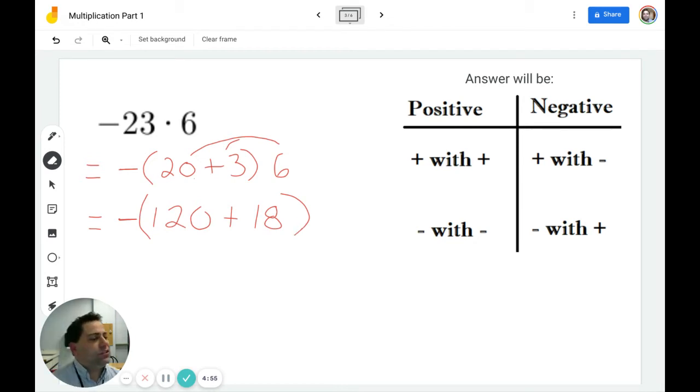And now I have to just add 120 plus 18. If you don't remember some of the strategies we talked about when doing addition, you just have to go back and view those videos. But essentially what we need to do is 12 plus 1 in this case. So 12 plus 1 is 13. And I know I have 8 plus 0 in the ones place. And I'm left with negative 138.